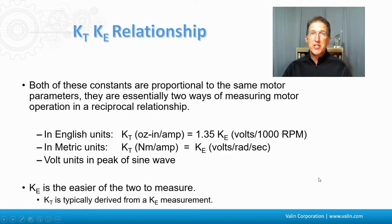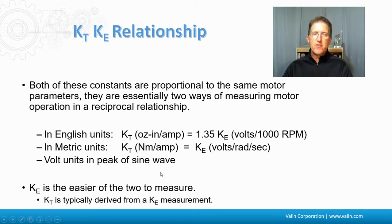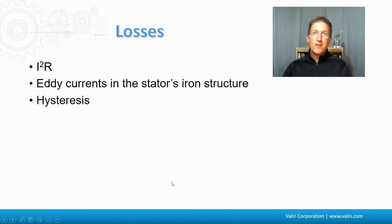There's a definite relationship between the two. Both are proportional to the same motor parameters, so they are essentially two different ways of measuring motor operation in a reciprocal relationship. The volts are expressed as the peak of the sine wave. Since the KE voltage is the easier of the two to measure, the KT is typically derived from the KE measurement. There are losses that have to be taken into account when measuring KT and KE and evaluating motor efficiency.